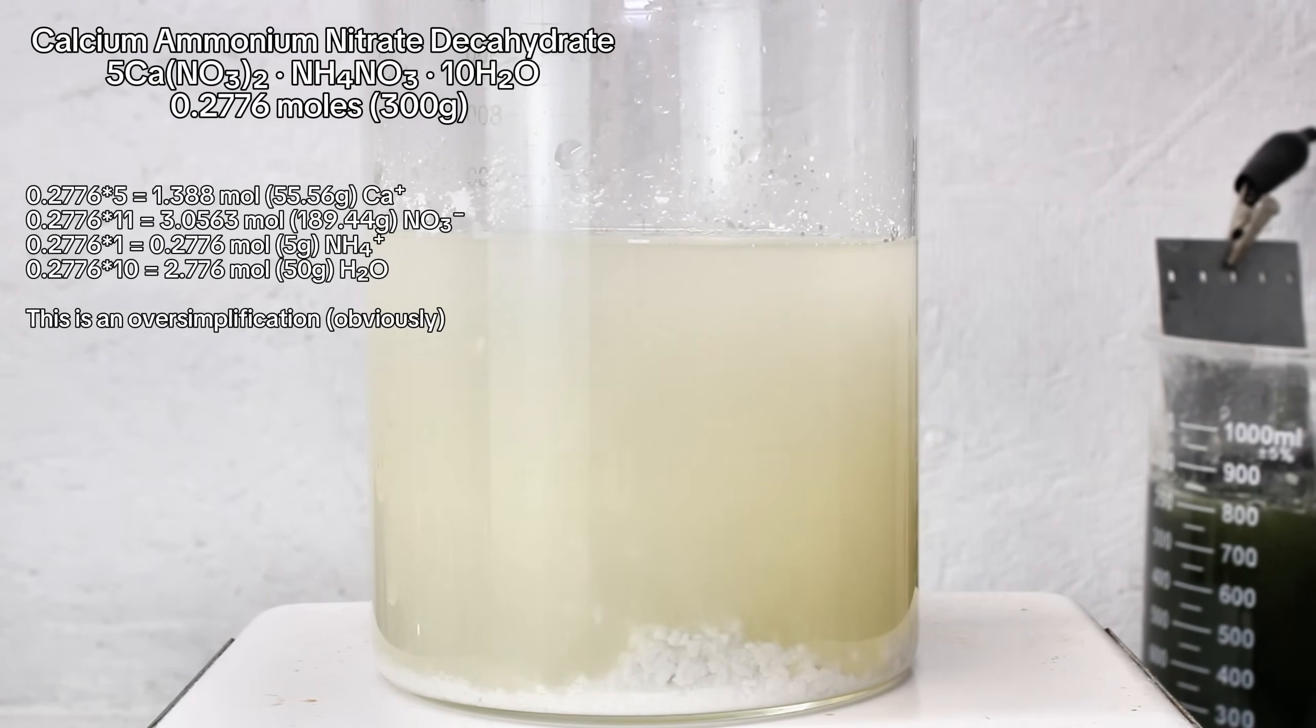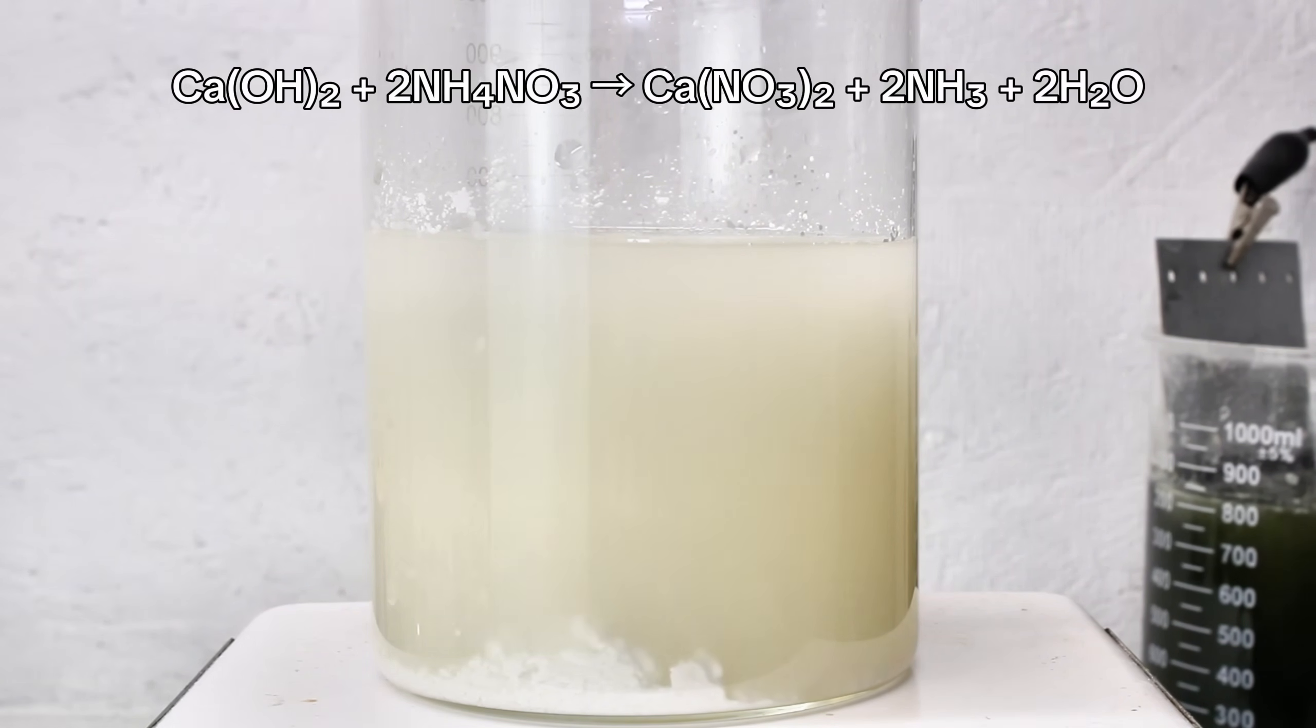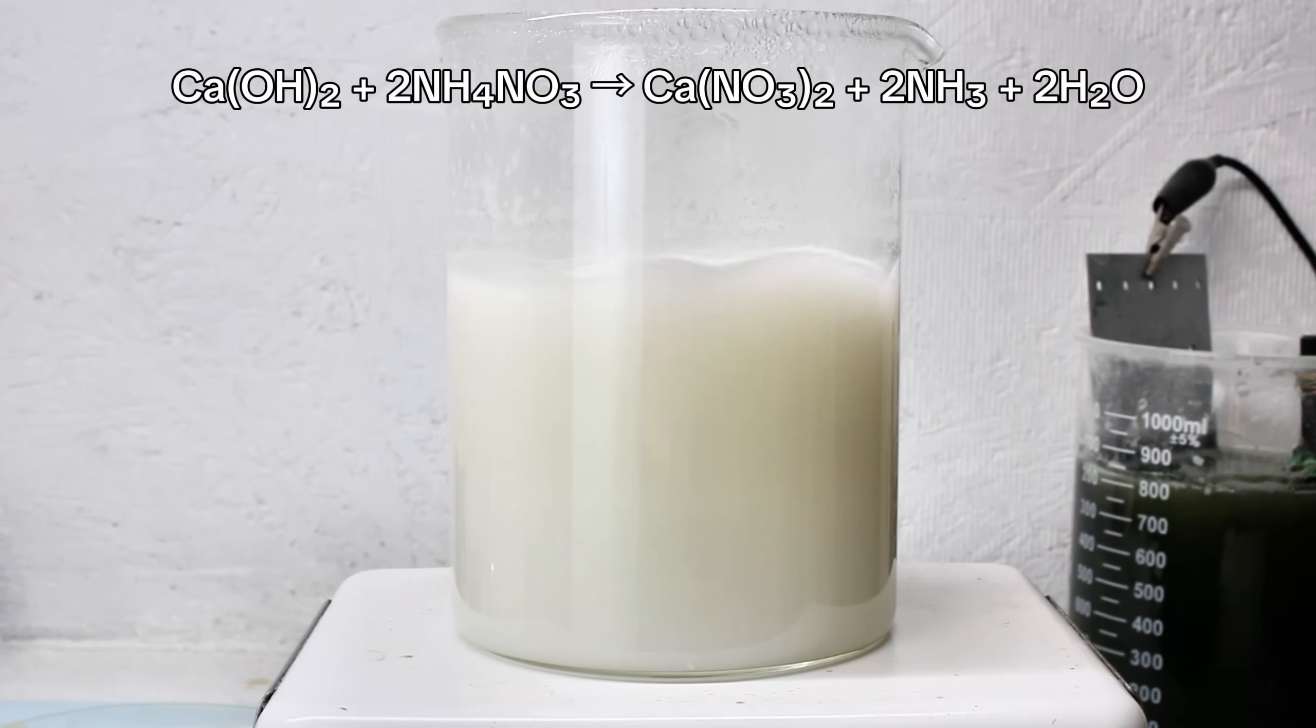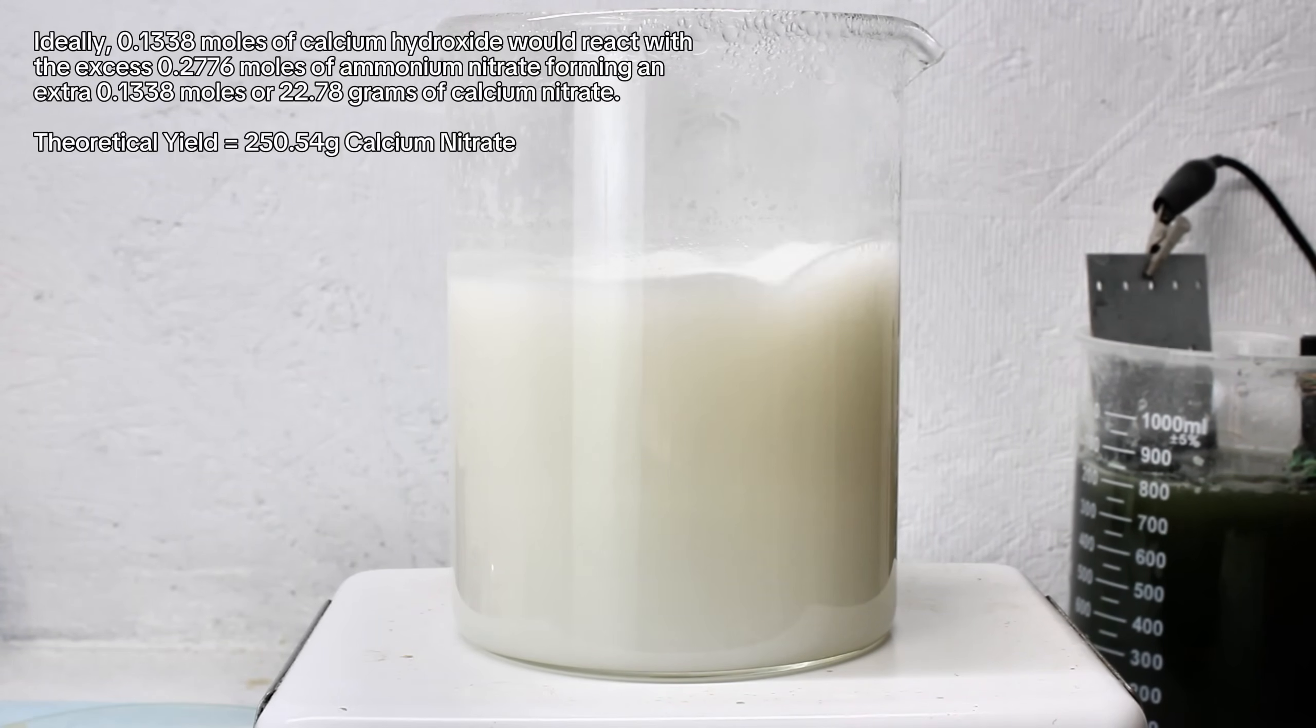Adding calcium hydroxide under heat will force a reaction between one molecule of calcium hydroxide and two ammonium ions forming two molecules of water and two molecules of ammonia gas, leaving the calcium ion behind to react with two nitrate molecules forming an additional molecule of calcium nitrate. Ideally, this reaction will purge all ammonia from solution while also generating an extra 22.78 grams of calcium nitrate to bring the theoretical yield to 250.54 grams of pure calcium nitrate.